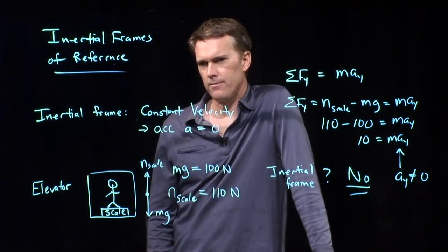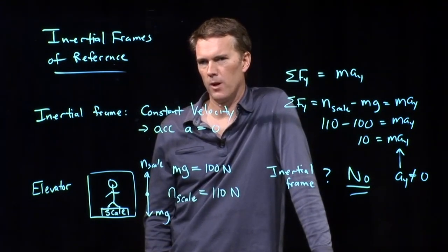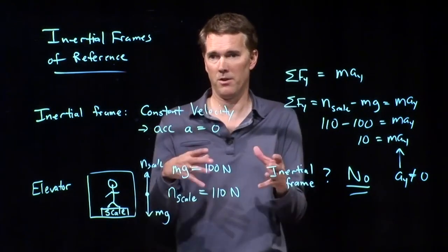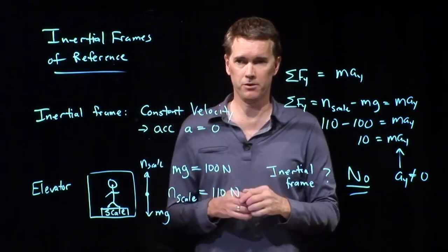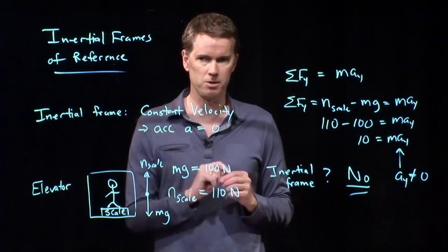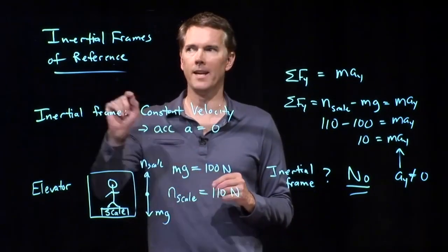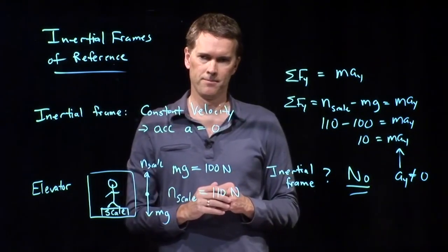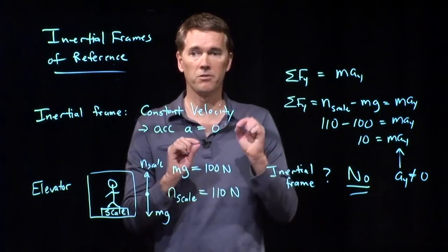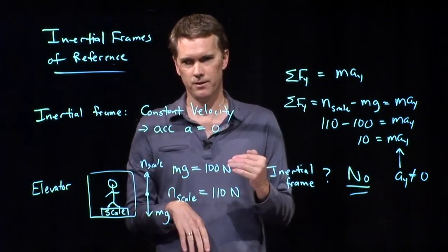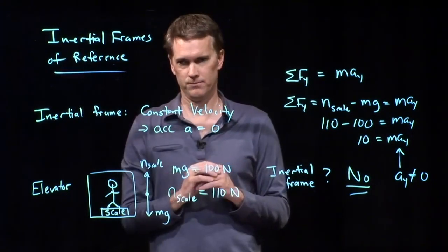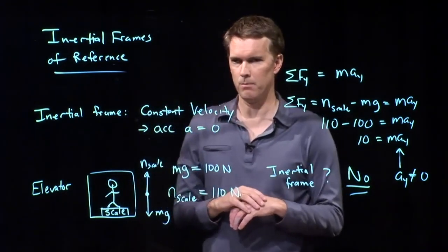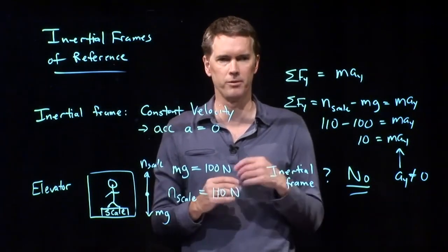Exactly. In terms of being on the Earth — spinning, rotating — we are moving in a circle right now. If you are moving in a circle, you are accelerating. You have centripetal acceleration, which means you are in a non-inertial frame. Now, that acceleration is very small compared to g, so to a good approximation we can say we are in an inertial frame. But technically speaking, it's really a non-inertial frame because we're moving in a circle.